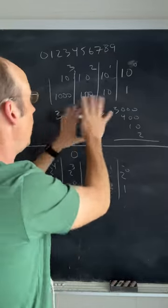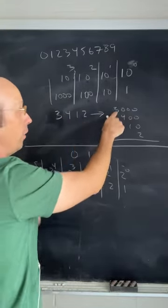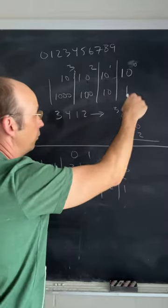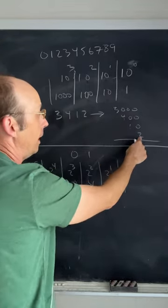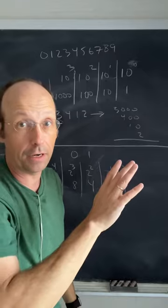And so forth. So if I have the number 3,412, that's 3 thousands, 4 hundreds, 1 ten, and 2 ones. Add that up and you get the right number.